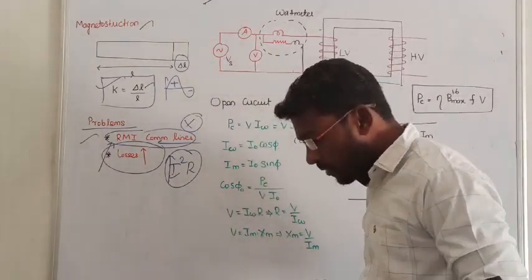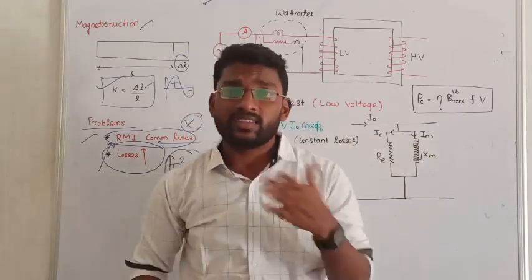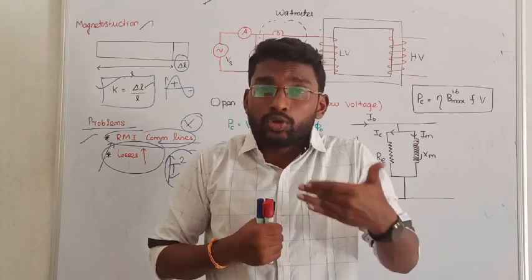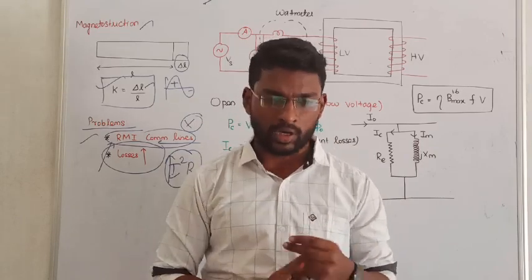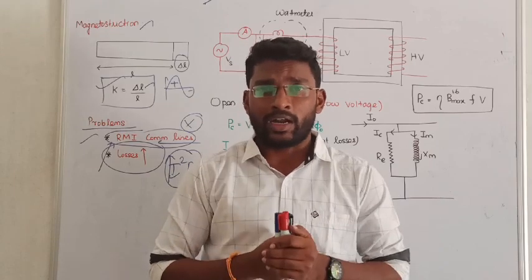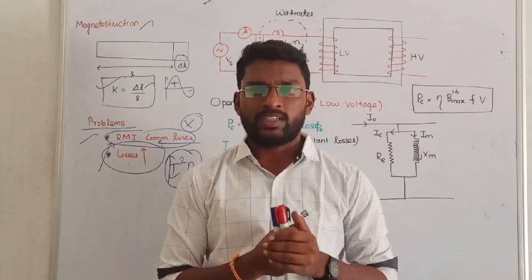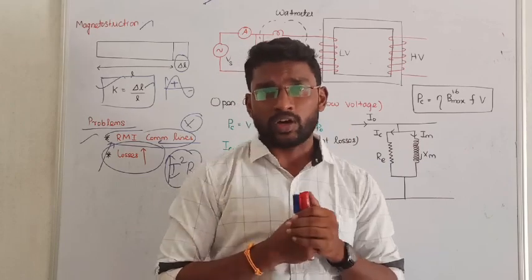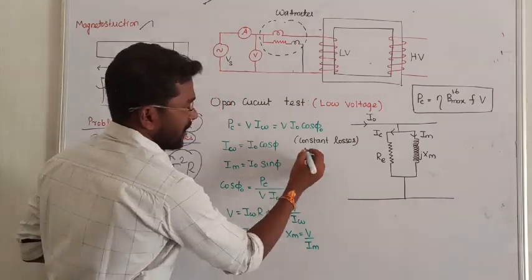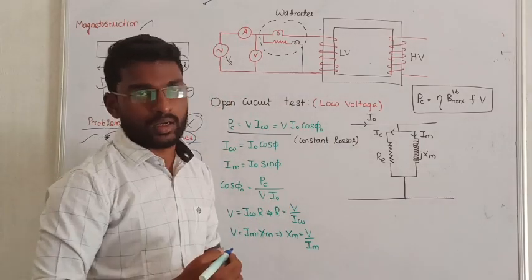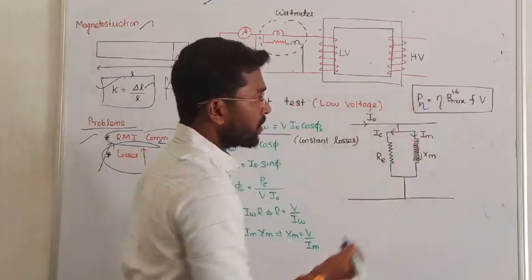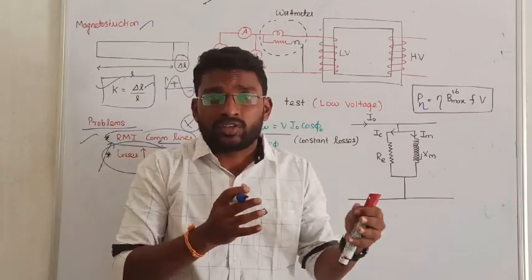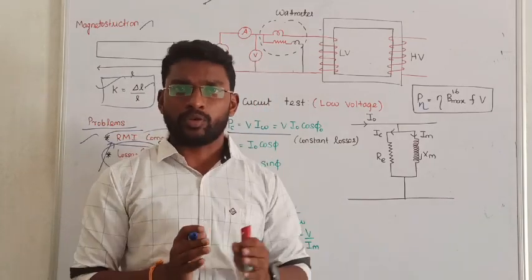We are going to conduct two tests. Apart from these we are going to conduct one more special test that is called a sampling test. Now, the purpose of the open circuit test is to identify the constant loss, that is called core loss, in our transformer — that is the hysteresis loss and core loss.